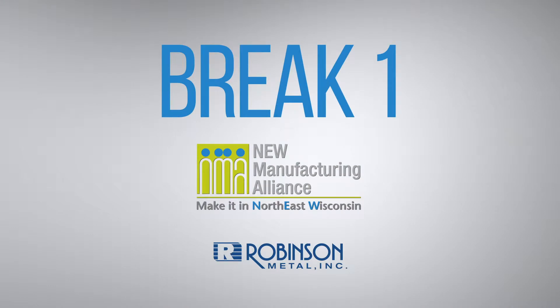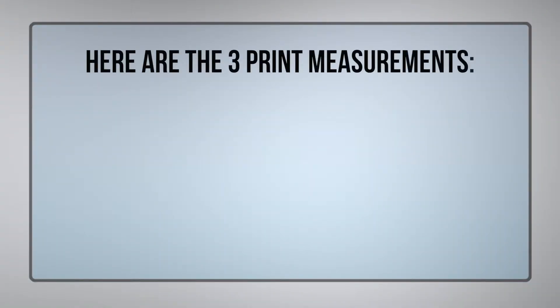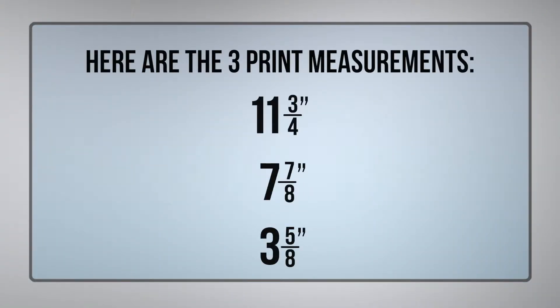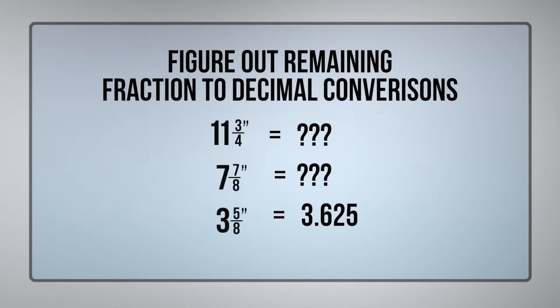Do you know how to convert fractions to decimals? Yes, I do. Let's get started. I do know my fraction-decimal conversions up to the nearest 16th, but if I did not, I would take the top number divided by the bottom number. For example, 3 and 5 eighths — I would take 5 divided by 8, which gives me 0.625, and then add the 3, giving 3.625, and that is what we would put into the press brake.